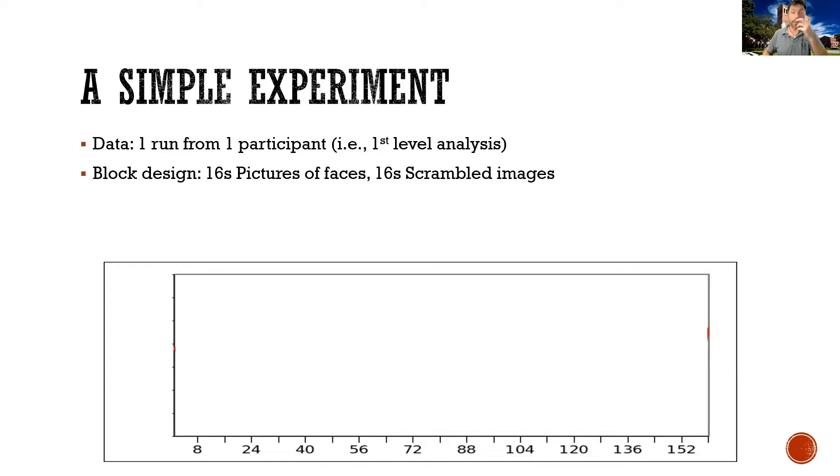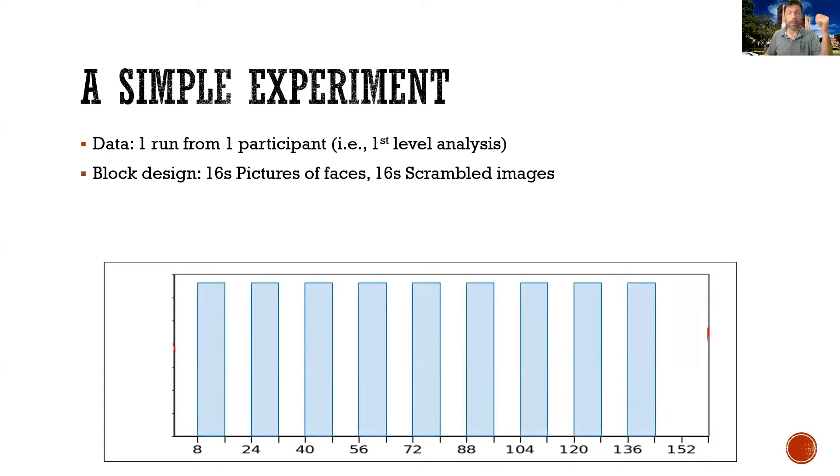Now, the type of experiment that we are doing in this imaginary case is a very simple block design. In fact, it's 16 seconds of viewing pictures of faces and 16 seconds of viewing just scrambled images. So the design looks somewhat like this, with each of these blocks pointing to when pictures of faces were presented.